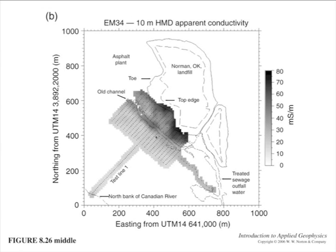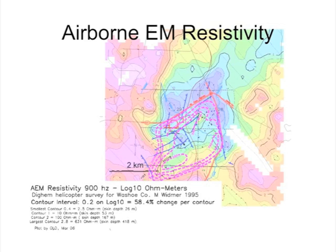Here also are the EM34 results at an intermediate depth of 10 meters — the same story. There's a lot of support for leaching into the old channel and pollution invasion going into that channel. If you'd seen that same effect with only one instrument at only one depth range, it might be less convincing. But if it's reproducible over different instruments and different depth ranges — as the EM34 allows by changing the coil separation — then you have more support for a defensible conclusion.